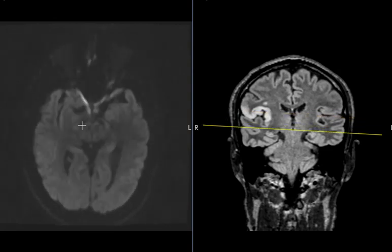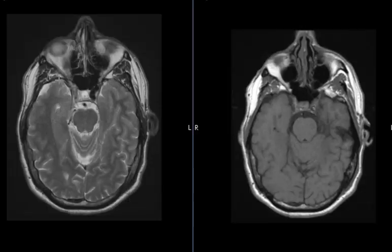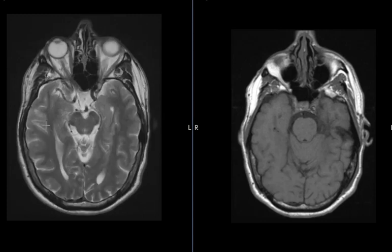We're going to look now at another sequence called a T2-weighted sequence. We see the left internal carotid artery is normal — this is a normal flow void. Flowing blood will look dark on this sequence, and the left ICA or internal carotid artery is open. But look at the right ICA — we don't see the normal flow void, so there is limited or no flow within the right internal carotid artery. The ICA perfuses the right middle cerebral artery, which we've already seen has the infarction.